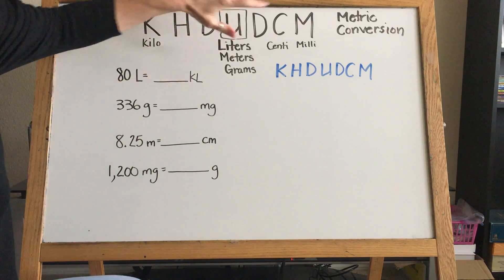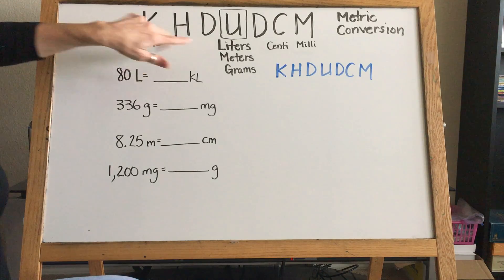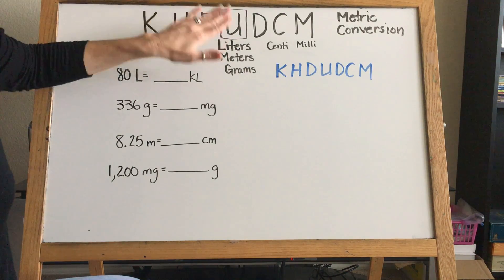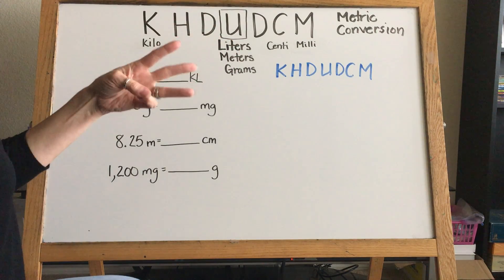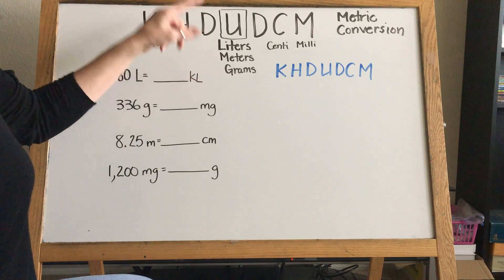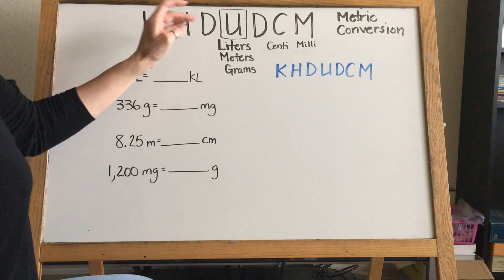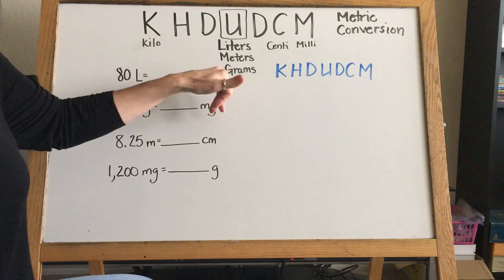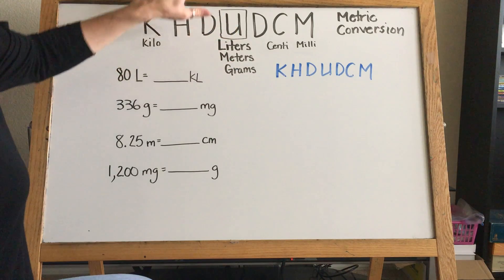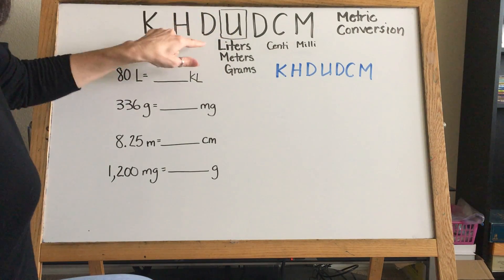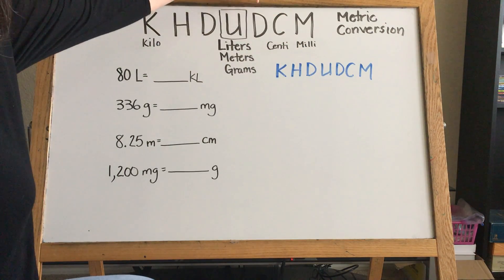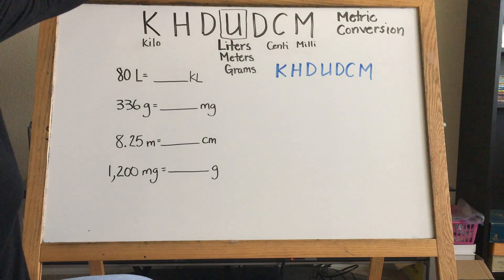In fifth grade, of all the units we learned, we have kilo and we have the unit of measure — the U stands for unit of measure. In the metric system there are three different kinds: liters if we're doing liquid, meters if we're doing length, and grams if we're doing weight. The U represents the basic unit of measure of liters, meters, or grams. Then we have centimeter and millimeter. You'll do deci, deca, and hecto in sixth grade, but for fifth grade this is all you need to know.